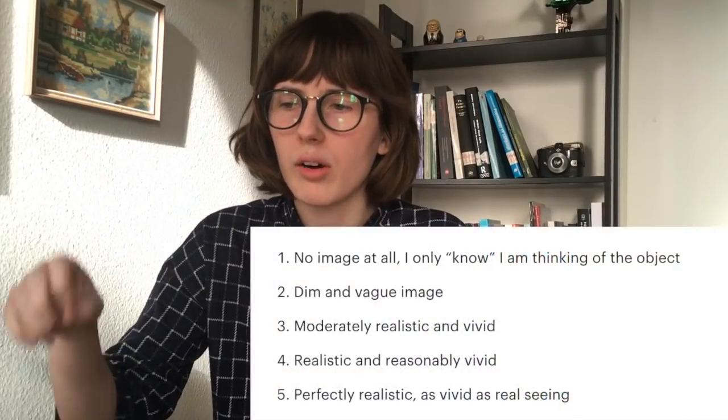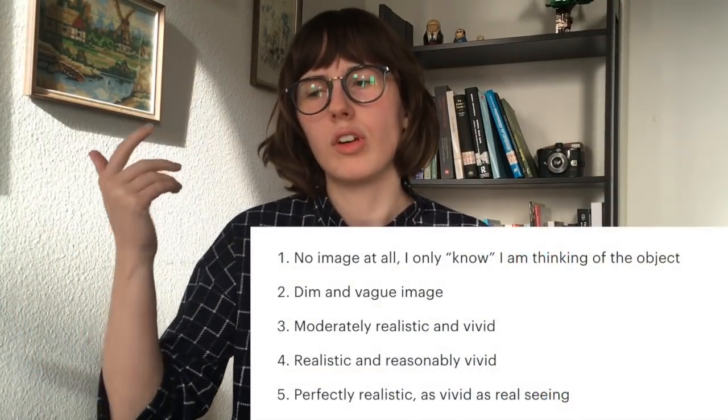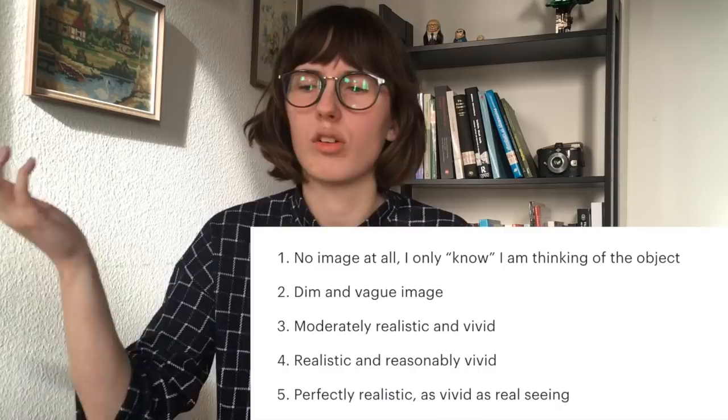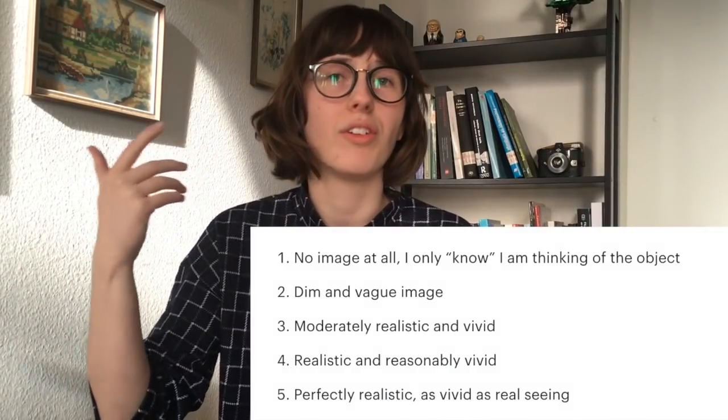But obviously it leaves out a lot of complexity, and it sort of assumes that there is only one aspect of visualization that is interesting. It doesn't really ask about differences in color, differences in light, differences in anything really. It just assumes that there are five degrees and that it isn't really a spectrum, but only a 2D scale. So the VVIQ scale goes from 'no image at all, I only know I'm thinking of the object,' to 'dim and vague,' 'moderately realistic,' 'realistic and reasonably vivid,' and then 'perfectly realistic and as vivid as real seeing.'